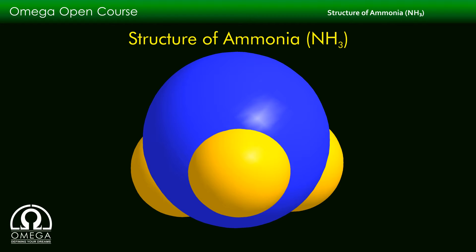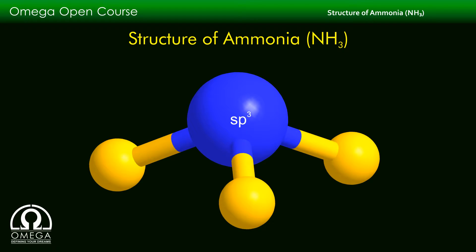This is the space fill model of ammonia. In the ammonia molecule, the nitrogen atom is in sp3 hybridization, and the nitrogen-hydrogen bond is formed by the overlapping of the sp3 hybridized orbital of nitrogen and the s orbital of hydrogen. As is clear from the model, three such nitrogen-hydrogen bonds are present. The fourth sp3 hybridized orbital of nitrogen has a lone pair of electrons.